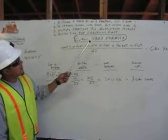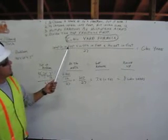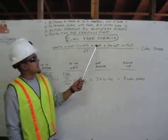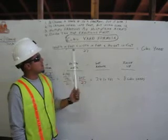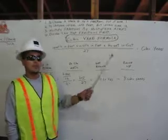So this is our cubic yard formula. We've got length in feet, times width in feet, times height in feet, all over twenty-seven. That will give us our cubic yards.